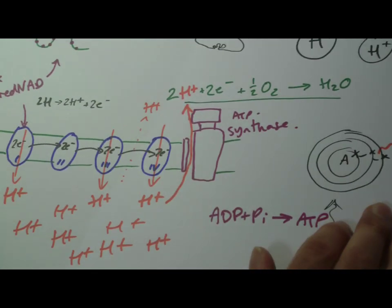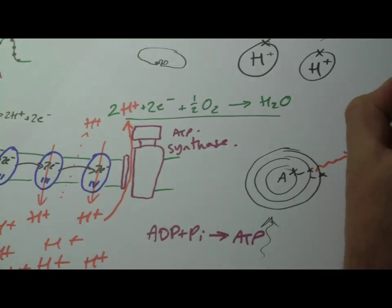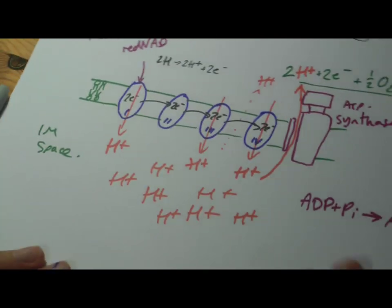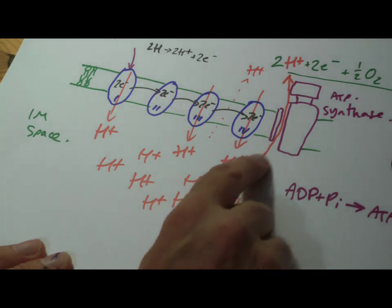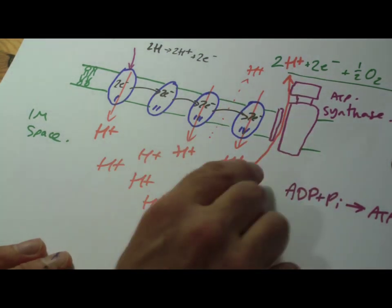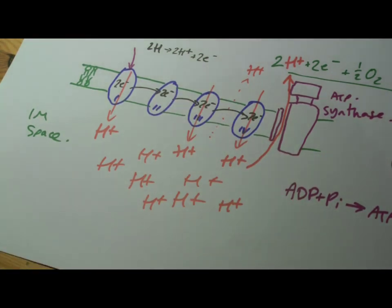A couple of last points on specific words. Chemiosmosis, which is a rather nice word, is referring to this bit where the protons flow down the concentration gradient, moving from a higher concentration, electrochemical concentration, if you like, to a lower electrochemical concentration.